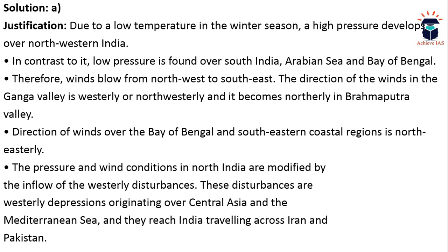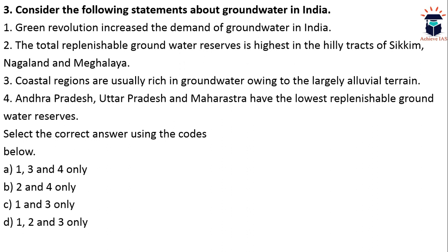Next question: consider the following statements about groundwater in India. First — the Green Revolution increased the amount of groundwater in India. Second — the total replenishable groundwater reserves are highest in the hilly tracts of Sikkim, Nagaland, and Meghalaya. Third — coastal regions are usually rich in groundwater owing to the largely alluvial terrain. Fourth — Andhra Pradesh, Uttar Pradesh, and Maharashtra have the lowest replenishable groundwater reserves. Only the first and third statements are correct.